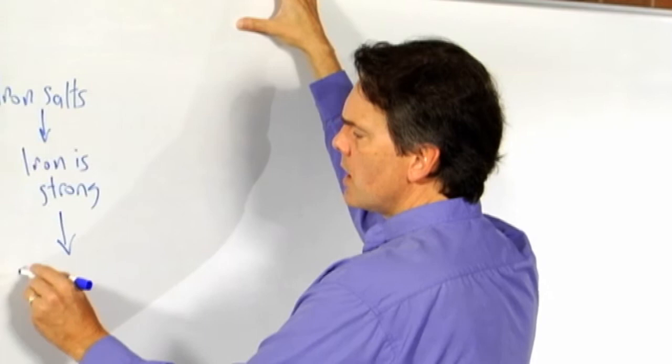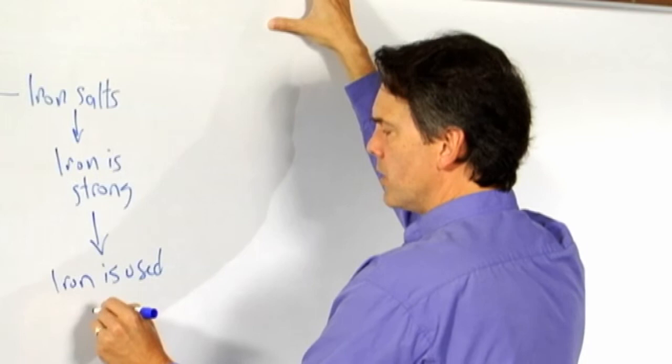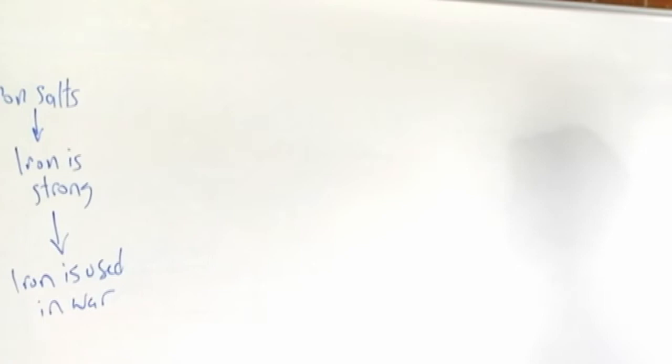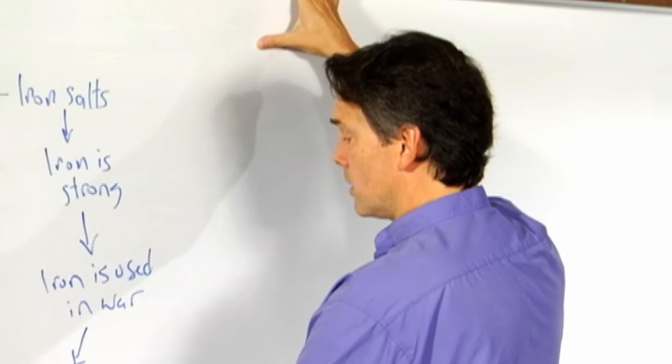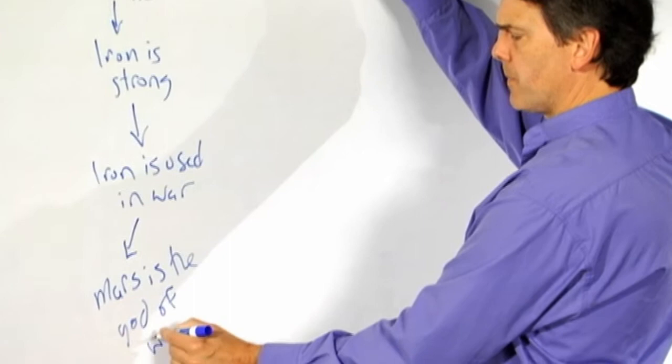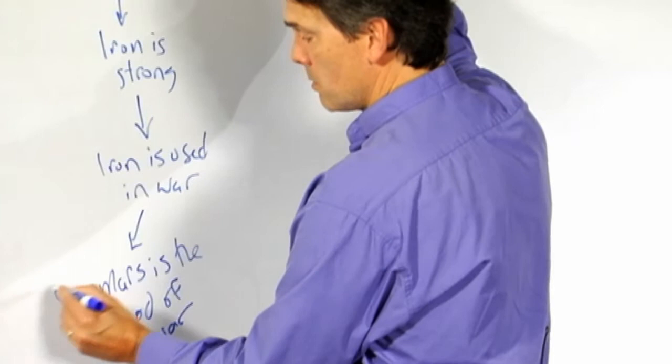We could say iron is used in war because it's so strong. We use it for making our weapons and our shields. And we also know that, you'll like this part, Mars is the god of war.